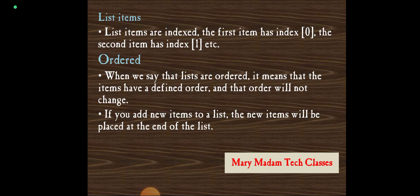Changeable. If we say changeable, the list is changeable, meaning that we can change the list by adding and removing items in the list after it has been created. When we created the list, only three items are there. Now we are going to add another element, it is added. If I want to delete or remove the element in a list, the list will be changed.